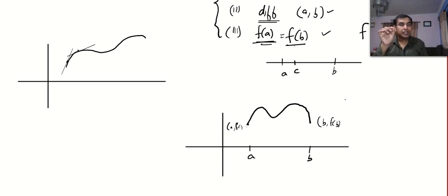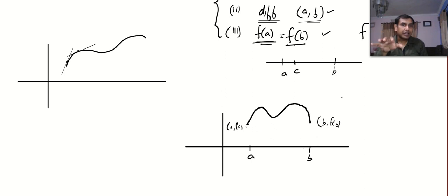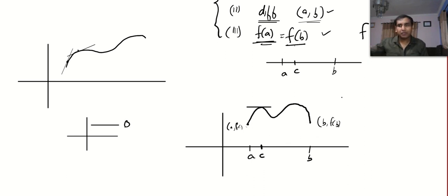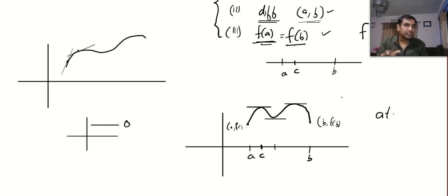One last time: there are three conditions. First, the function should be continuous — the graph should not break at any point. Second, the slope of the tangent is defined at each and every point in the open interval. Third, the height at a and height at b are the same. What Rolle's tells us is: if all conditions are satisfied, there will be at least one point where the tangent will be parallel to the x-axis, meaning its slope will be zero. That is why we use the word 'at least' — minimum one, greater than or equal to one.